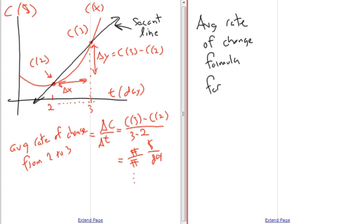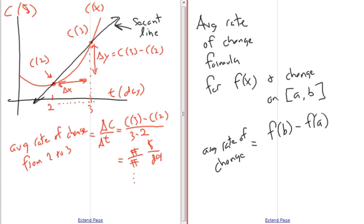So, the average rate of change formula, definitely something that you want to write down. This is the average rate of change formula for f of x and a change over the course of time starting at a and ending at b would equal this: f of b minus f of a divided by b minus a. So, definitely want to write that one down. This is the average rate of change formula.